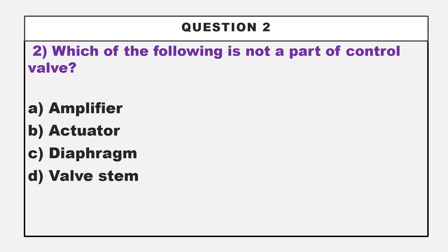This is actually a simple question. The answer is option A, amplifier. We know actuator, diaphragm, and valve stem are all parts of a control valve. There is no amplifier in a control valve, so amplifier is not a part of control valve.